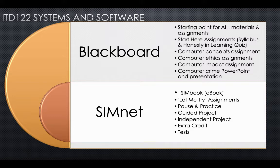The Let Me Try is also in the Windows chapter, the first chapter of the course. The remaining assignments in SimNet do not begin until Word Chapter 1. The Pause and Practice is an assignment you create as you move through the chapter — there'll be three or four of these. You learn some concepts, then pause and practice them. The Pause and Practice builds through the chapter: you start with one file, do work to it on each one, and at the end submit the completed file into SimNet.